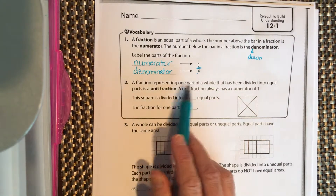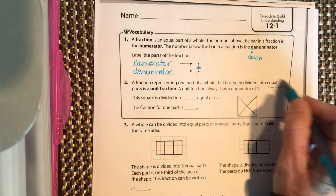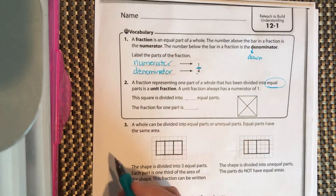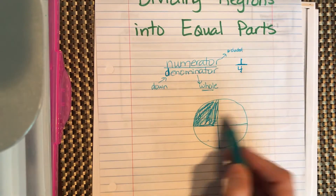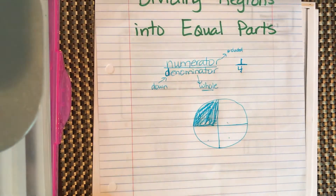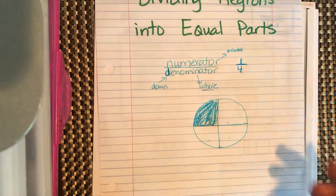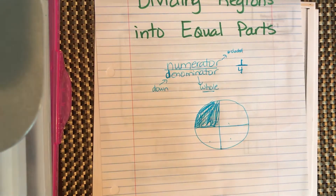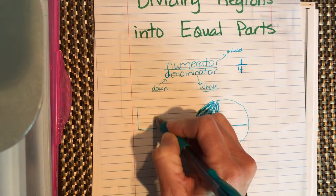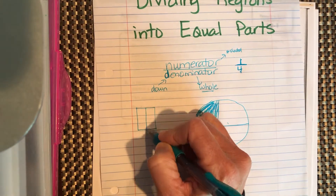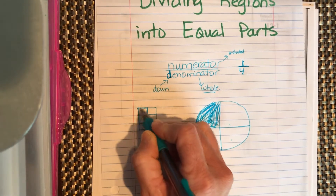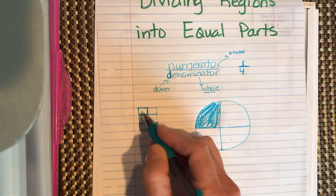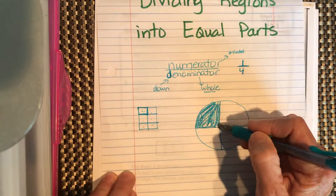A fraction representing one part of a whole that has been divided into equal parts is called a unit fraction. If I had two parts shaded we wouldn't call it a unit fraction — only one part shaded is a unit fraction. Just like when we counted square units in area, one of them was a unit; this is the same idea.